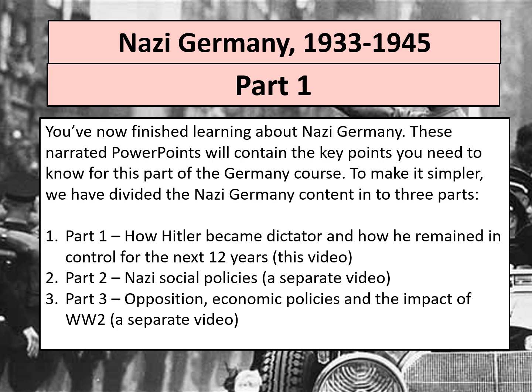Hello and welcome to the Colton Academy's revision lesson for Nazi Germany. We've decided to break this down into three different sections as the Nazi Germany section of the course is quite large, so there are three different videos each on the YouTube playlist. Today you only need to know about part one: how Hitler became a dictator and how he remained in control for the next 12 years. Next time we'll think about Nazi social policies, and after that opposition, economic policies, and the impact of World War II.